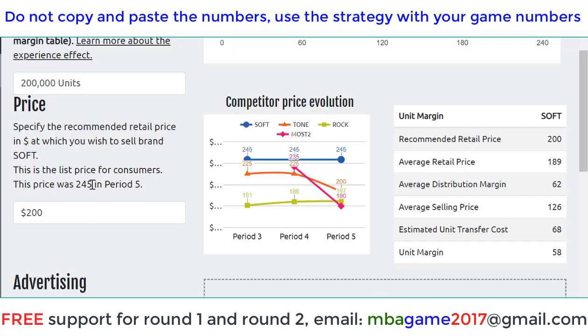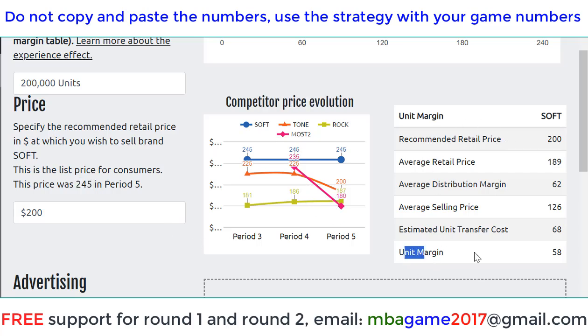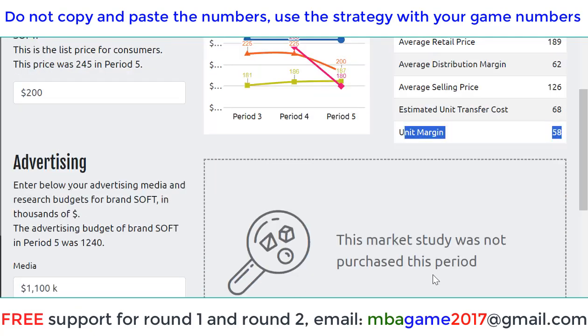Then we set the price. We can change the price to better sell and compete with competitors' prices. You need to check the unit margin here — about 30% is okay. If you have a different strategy, you can lower or raise that.